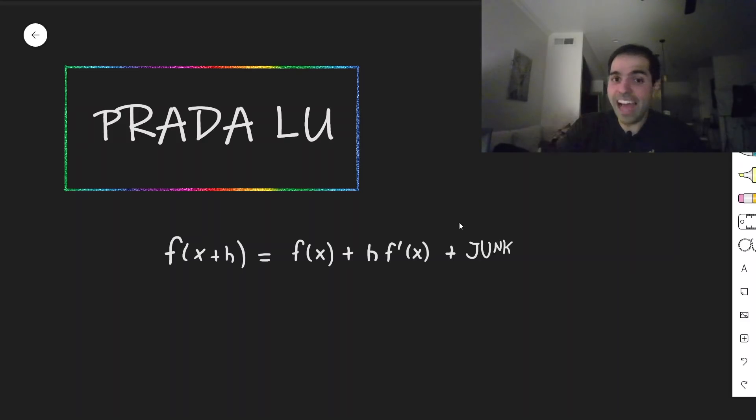And in particular, we can actually take this identity to be the definition of f prime. Namely, if you have f of x plus h equals f of x plus h times some number, that number is defined to be the derivative of f. And using this, let me give a cute application.